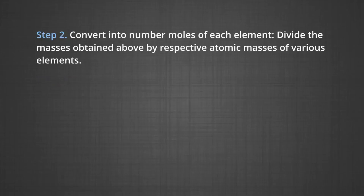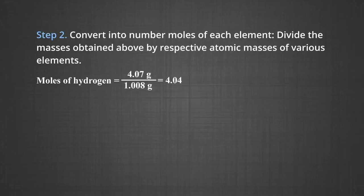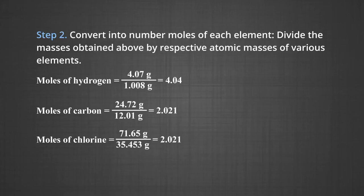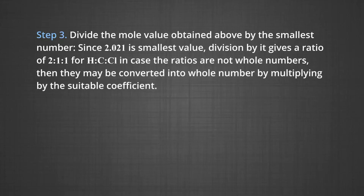Step 2 — convert to number of moles by dividing by respective atomic masses. Moles of hydrogen = 4.07 ÷ 1.008 = 4.04. Moles of carbon = 24.27 ÷ 12.01 = 2.021. Moles of chlorine = 71.65 ÷ 35.453 = 2.021. Step 3 — divide the mole values by the smallest number (2.021), giving a ratio of H:C:Cl = 2:1:1. If ratios are not whole numbers, they may be converted by multiplying by a suitable coefficient.